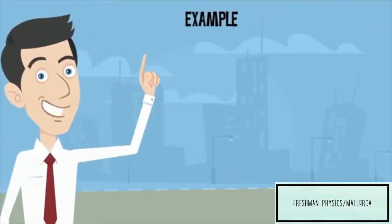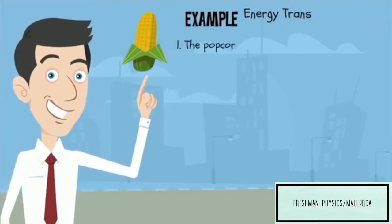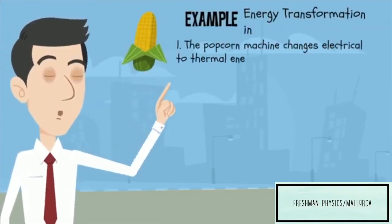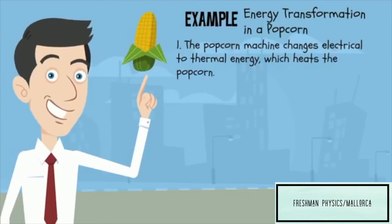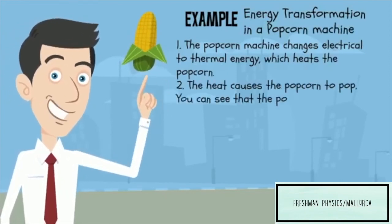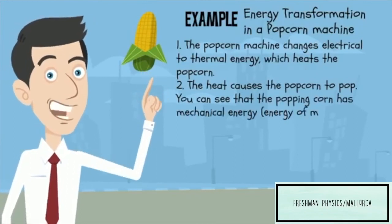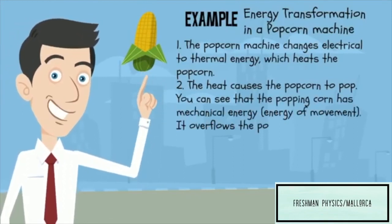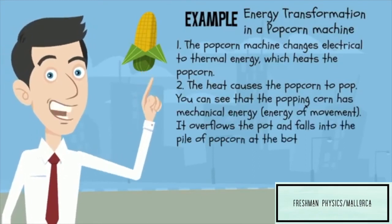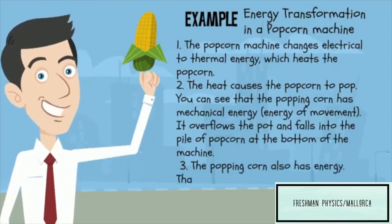Another example is the energy transformation that takes place in a popcorn machine. The popcorn machine changes electrical energy to thermal energy, which heats the popcorn. The heat causes the popcorn to pop. You can see that the popping corn has mechanical energy — it overflows and falls into the pile of popcorn at the bottom of the machine. The popping corn also has sound energy, which is why it makes a popping sound.